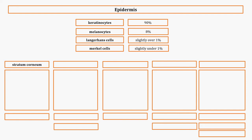The five layers of the epidermis all start with the word stratum: corneum, lucidum, granulosum, spinosum, and basal. All five of these layers have keratinocytes inside of them. That makes sense because 90% of the cells in the epidermis are keratinocytes, so each layer of the epidermis has keratinocytes in them.